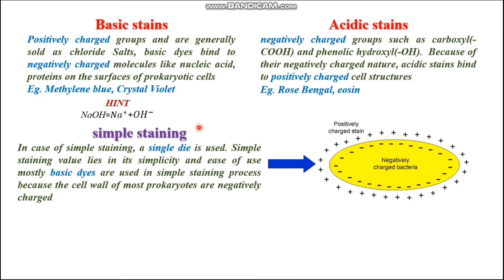What is simple staining? In simple staining, a single dye is used. Its value lies in its simplicity and ease of use. Mostly basic dyes are used in simple staining because the cell wall of most prokaryotes is negatively charged. Only one stain is enough for staining all the bacterial cells, and we can differentiate the bacterial cells from the medium.